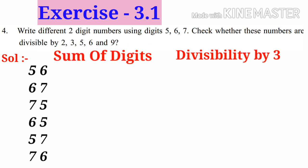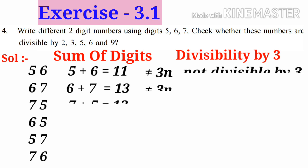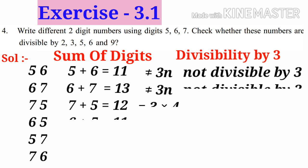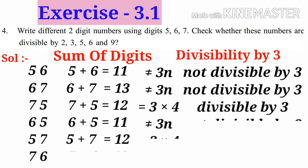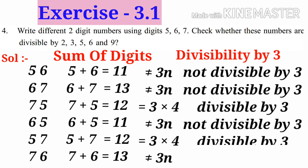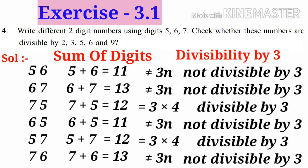Now let us check which numbers are divisible by 3. For this, take the sum of digits. The first number sum is 11, second number 13, third number 12, fourth number 11, fifth number 12, sixth number 13. Out of these sums, only 12 can be written as a multiple of 3. So the third number and fifth number are divisible by 3. Remaining numbers' sums are not multiples of 3, so they are not divisible by 3.